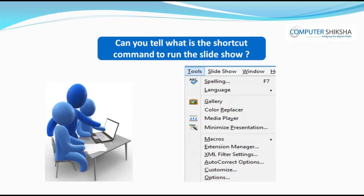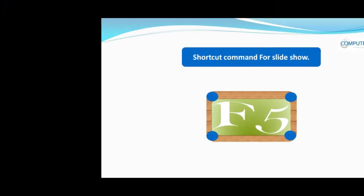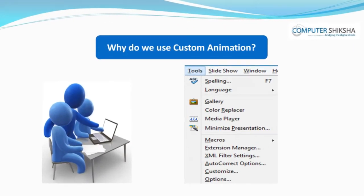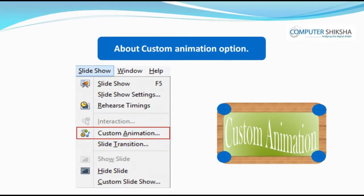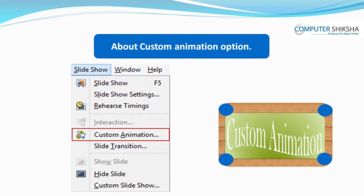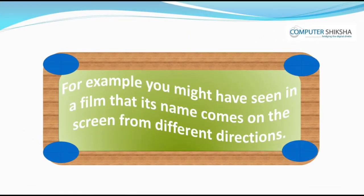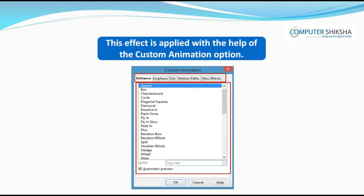Can you tell what is the shortcut command to run the slide show? To run the slide show, you need to use the F5 command. Why do we use custom animation? With custom animation, you can get many different effects on your slide or on any object. For example, you might have seen in a film that its name comes on the screen from different directions. This effect is applied with the help of the custom animation option.